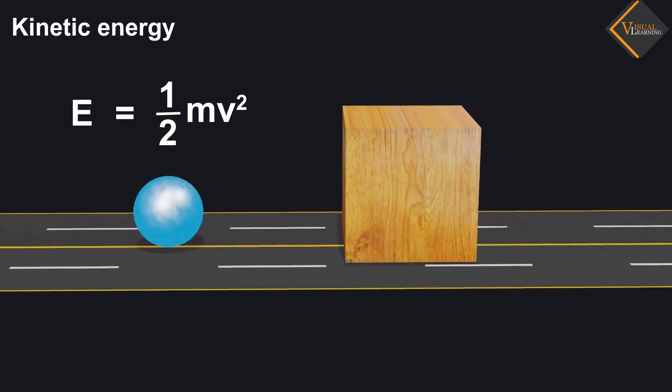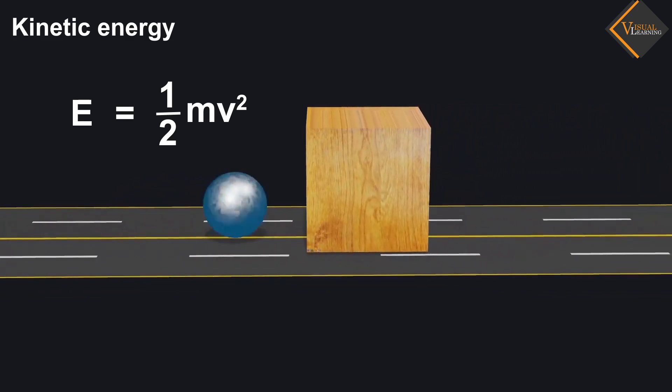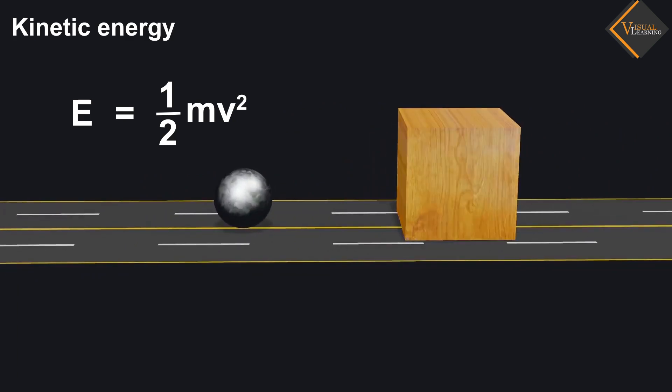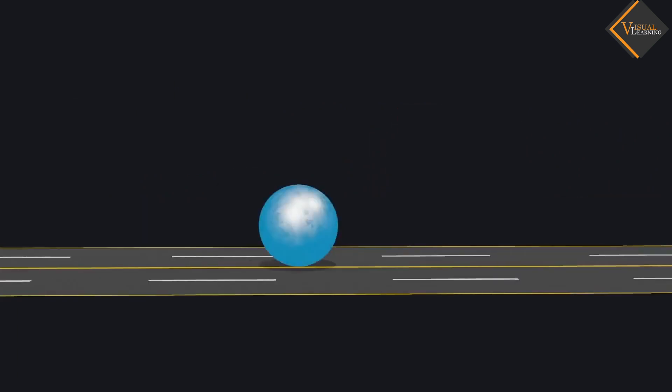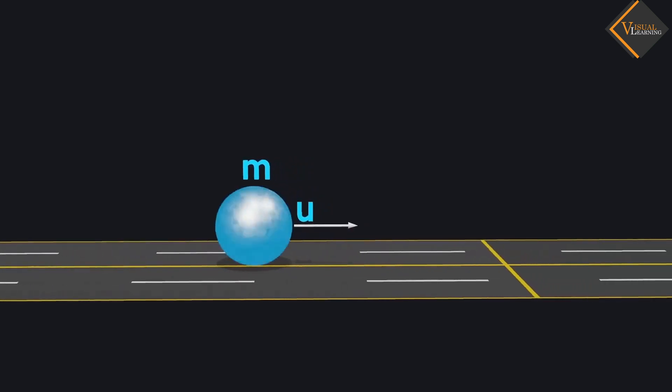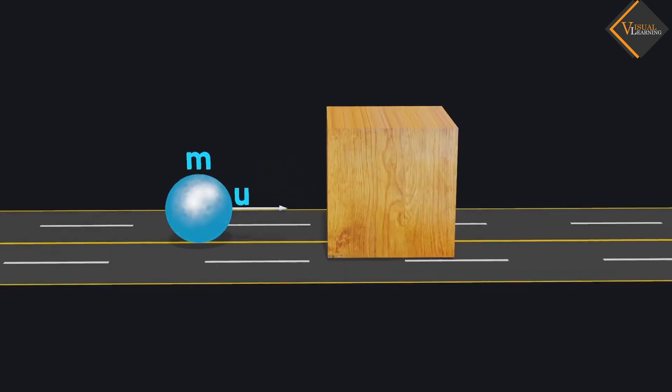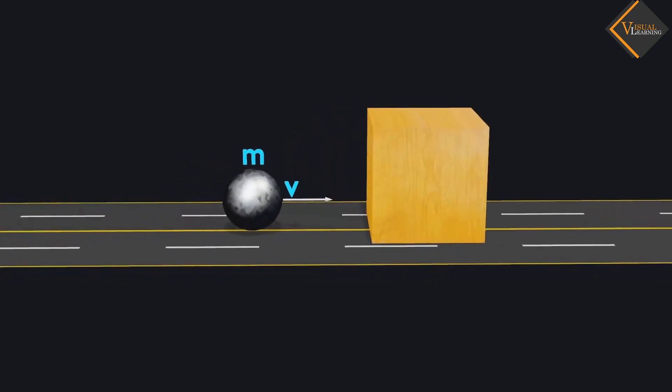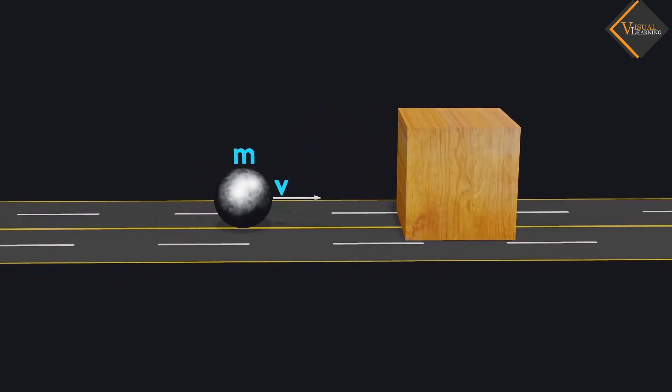Now, let us calculate work done by kinetic energy. In our previous example, consider u is the initial velocity of the ball, and v is the final velocity of the ball after hitting the wooden block.